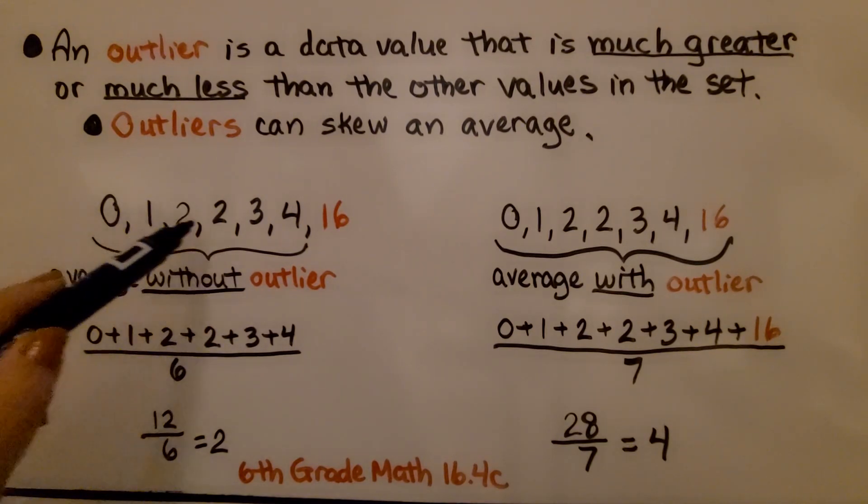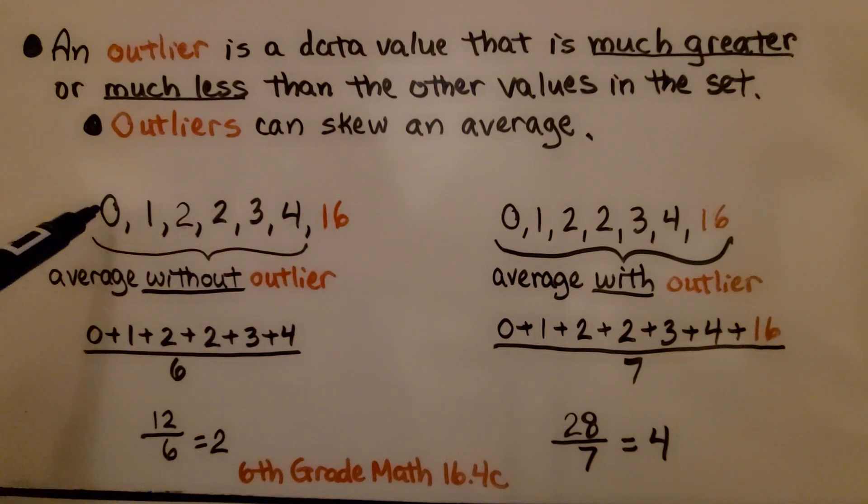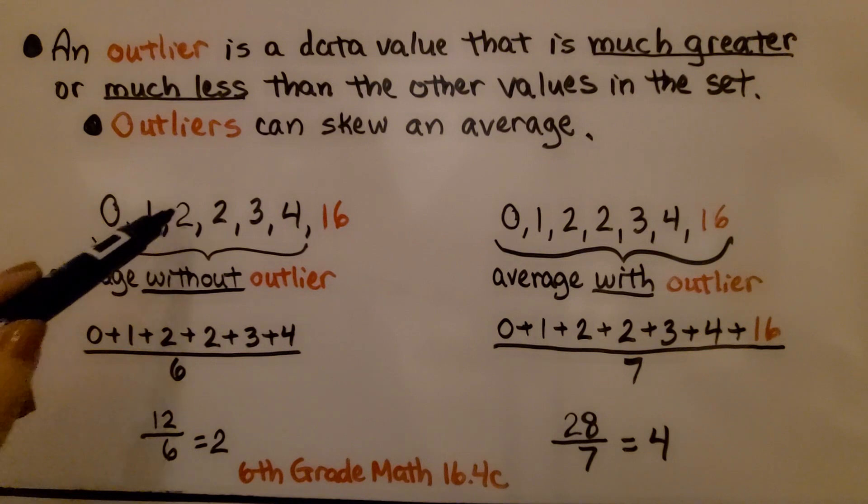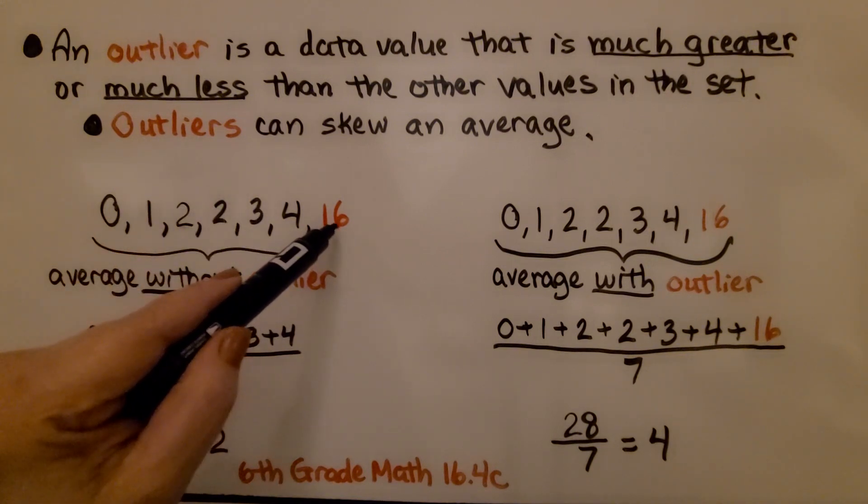Here we have some data values. If you look, they're all pretty close to each other. We have a zero, a one, a two, a three, a four, and then all of a sudden we have a 16. That's way greater than the other numbers.